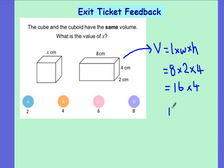6 times 4 gives me 24. 1 times 4 is 4 plus 2 gives me 6. So I know that the volume of this cuboid is 64 centimetres cubed.